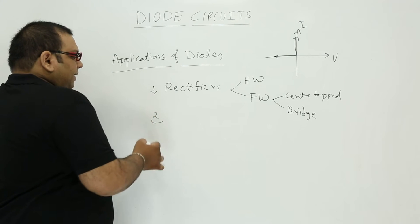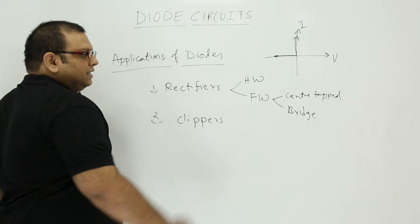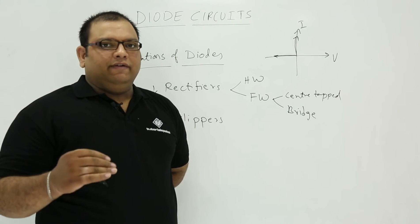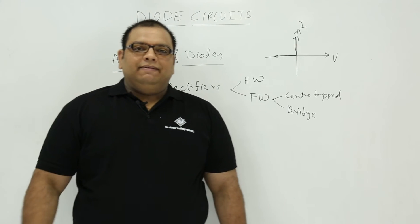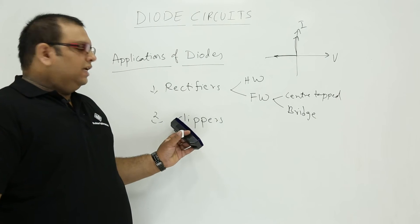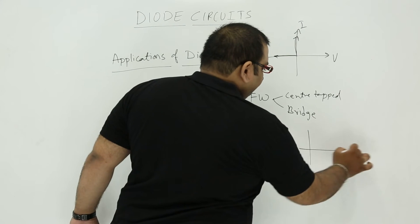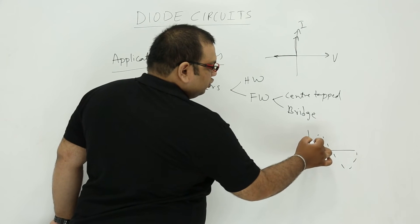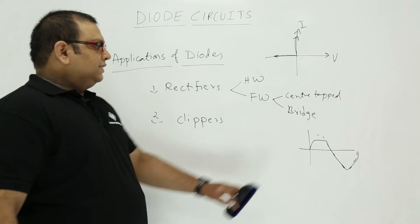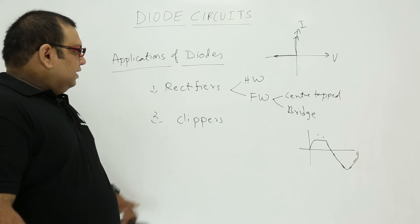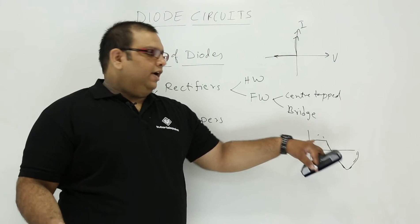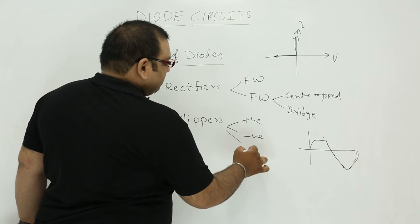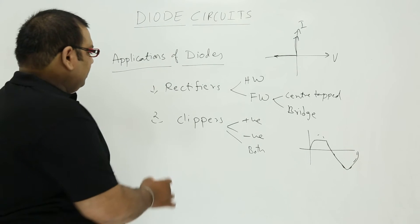The second application is clippers. Sometimes we do not require certain voltage portions — for example, we may not require the peak voltage or the negative peak. So we need to clip away those voltages using clipper circuits. Taking a sinusoidal waveform as input, if we want to clip away the positive peak, we use a circuit so the output clips that portion. This is called a positive clipper. We can also have negative clippers, and sometimes we clip on both sides.